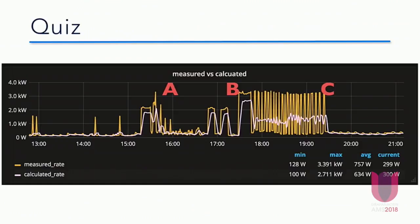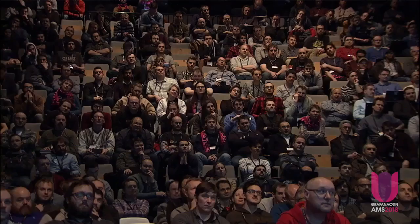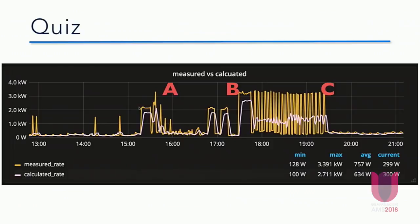So now we have a small quiz. This is a graph — the washing machine was running somewhere around this timeline. When do you think it was done? Everyone who thinks it was done at A, put their hands up. Everyone who thinks B, put their hands up. Everyone who thinks C, put their hands up.